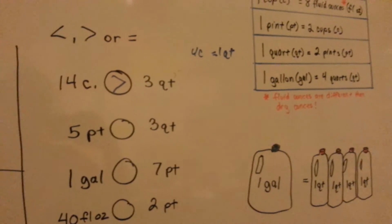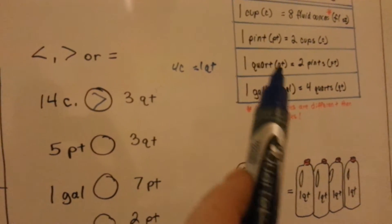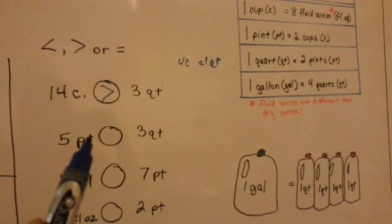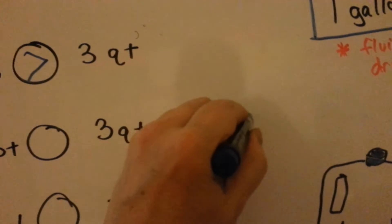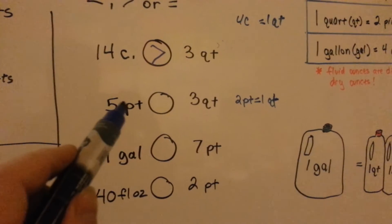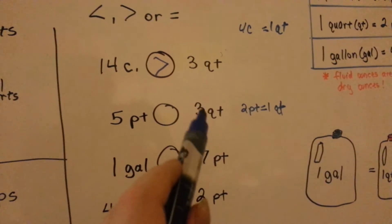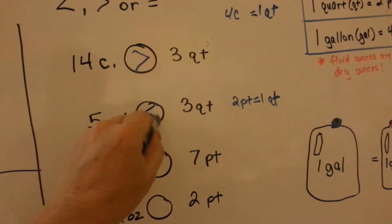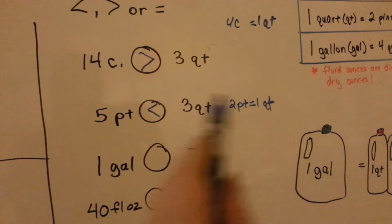Which is more: 5 pints or 3 quarts? There are 2 pints in a quart, so 2 pints equals 1 quart. How many pints would be in 3 quarts? 2 times 3 is 6. So there are 6 pints in 3 quarts. That means 3 quarts is bigger than 5 pints. I'm putting the conversion right here in the same order so we can see what's going on.